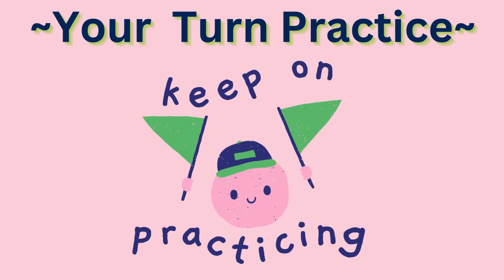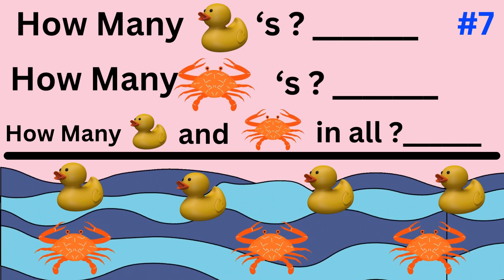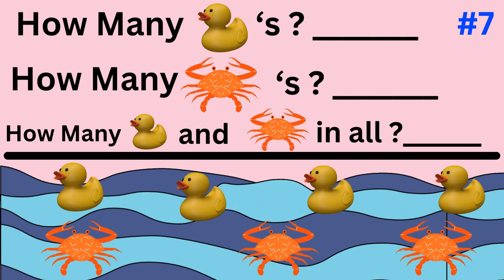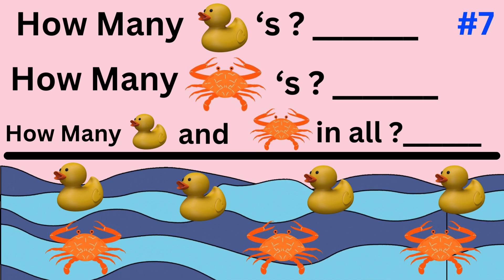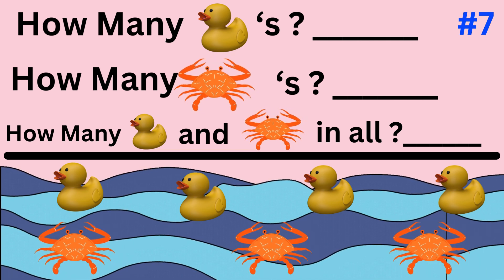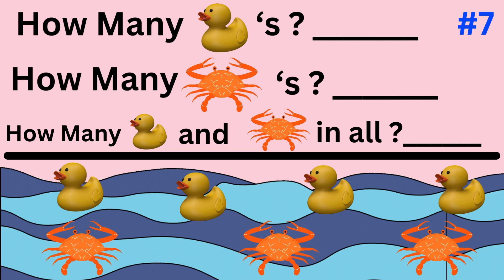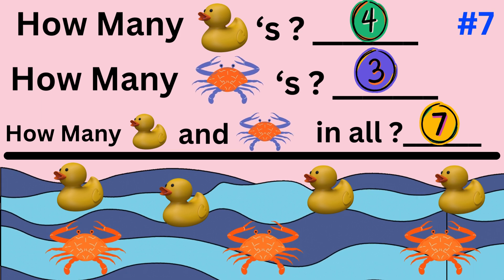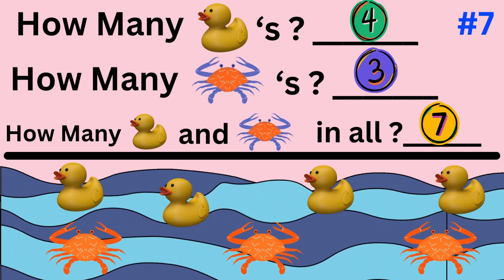Now it's your turn to complete addition word problems. Word problem number seven. The word problem asks how many yellow ducks are there and how many orange crabs are there, then how many ducks and crabs in all? Work the problem and then we'll review together. The answer is four yellow ducks plus three orange crabs equals seven animals in all.